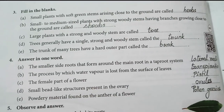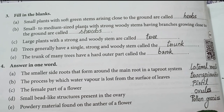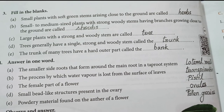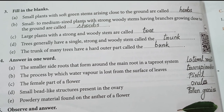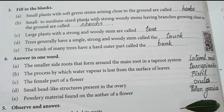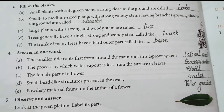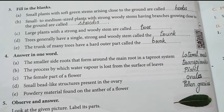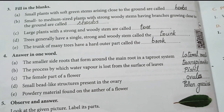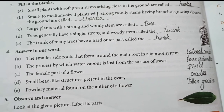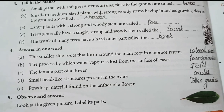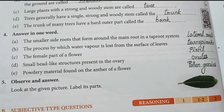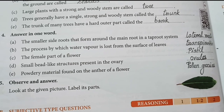Number three: Fill in the blanks. (a) Small plants with soft green stems arising close to the ground are called herbs. (b) Small to medium sized plants with strong woody stems having branches growing close to the ground are called shrubs. (c) Large plants with a strong and woody stem are called trees. (d) Trees generally have a single strong and woody stem called the trunk. (e) The trunk of many trees has a hard outer part called the bark.